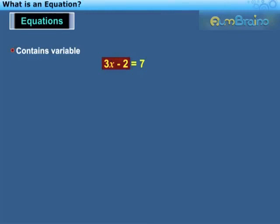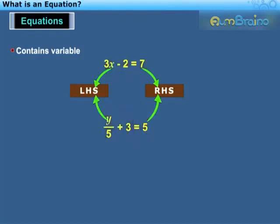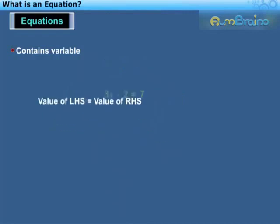The expression to the left of the equality sign is the left hand side or LHS, while the expression to the right of the equality sign is the right hand side or RHS. For example, in this equation, y upon 5 plus 3 is the LHS and 5 is the RHS.